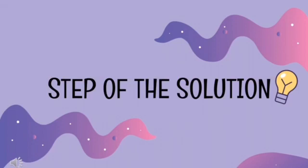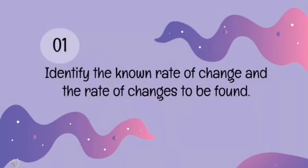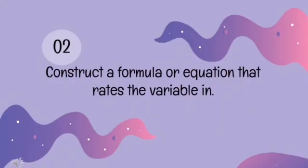Now we go through all the steps to solve the Related Rate problem. Step number one, we need to identify the known rates of change and the rates of change to be found in the equation. Step number two, we need to construct a formula or equation involving the variables from step one. To make it easier, draw an appropriate diagram or figure.